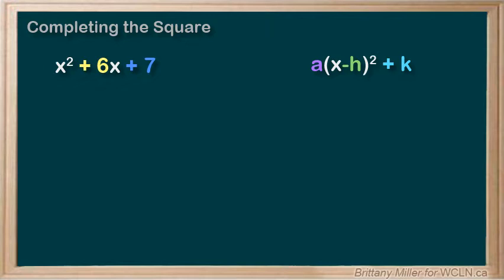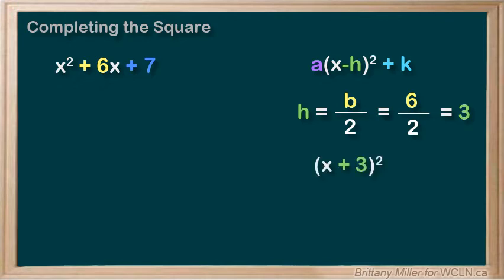I'll tell you right now that h in the vertex form is always going to equal b over 2 or half of b. In this example 6 over 2 equals 3 so we need to get something that we can factor into x plus 3 squared.